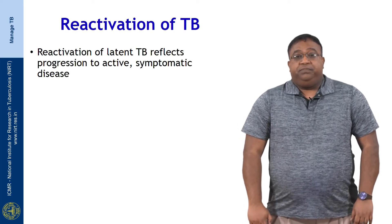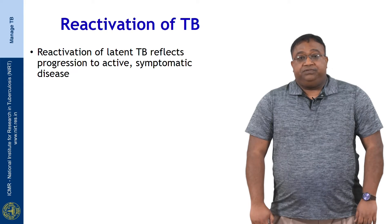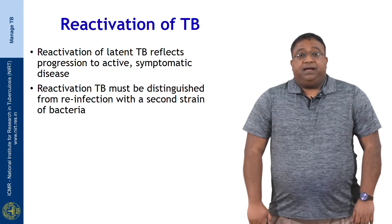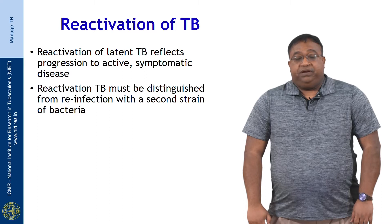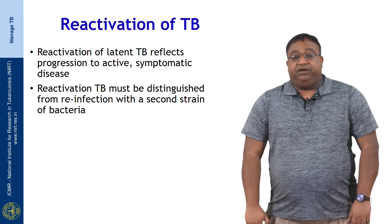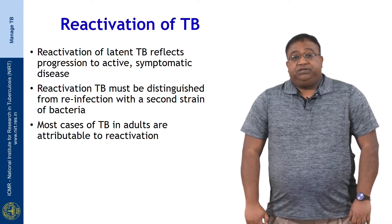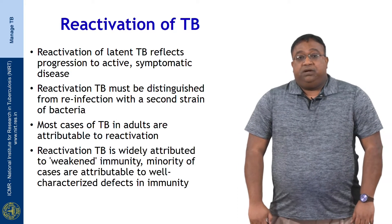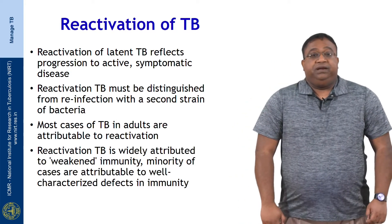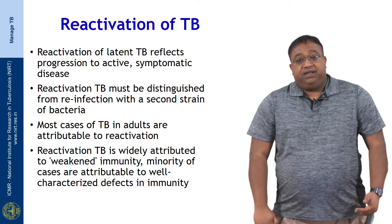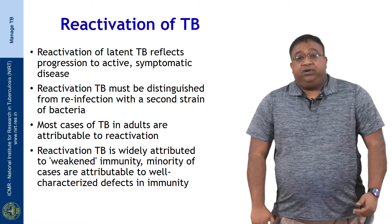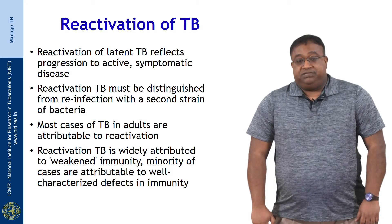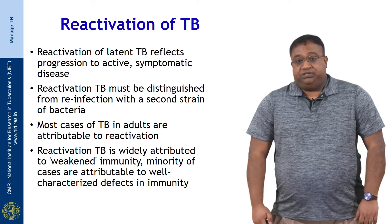Reactivation of latent TB pretty much reflects progression to active symptomatic disease from latent TB, and it must be distinguished from reinfection, which is usually with a second strain of bacteria. Most cases of TB in adults are attributable to reactivation, while reactivation is widely attributed to the so-called weakened immunity. Only a minority of cases are directly attributable to well-characterized defects in immune responses.